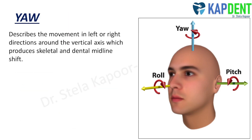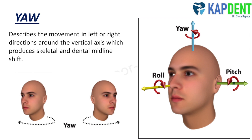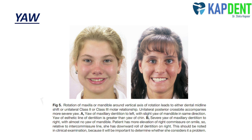The third term is yaw. Yaw describes the movement in left or right directions around the vertical axis. It can also cause unilateral Class II or Class III molar relationships. Extreme yaw causes asymmetrical posterior crossbite, i.e., buccal on one side and lingual on the other. In the given figure, the first patient shows yaw of the maxillary dentition to the left with slight yaw of the mandible in the same direction. The second patient shows severe yaw of the maxillary dentition to the right, and she also has a downward roll of dentition on the right side.